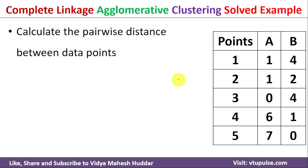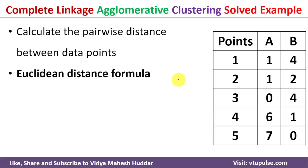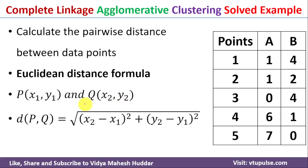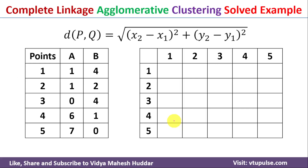We need to calculate the pairwise distance between the data points using Euclidean distance. We will use data point P with values x1, y1 and data point Q with values x2, y2. The distance between data points P and Q is equal to the square root of (x2 minus x1) squared plus (y2 minus y1) squared.